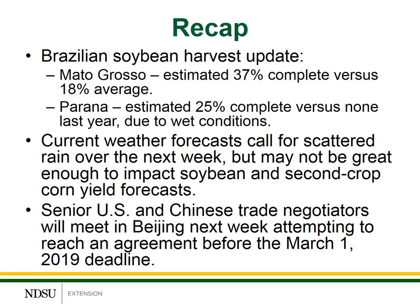To quickly recap: the yield and total production forecasts for Brazilian soybeans have slowly been dropping over the last two months, primarily because of hot, dry weather conditions in the central and southern growing regions. When we look at Argentina, they had a little bit of a slower start in planting progress, but their conditions have been a bit more favorable. The current expectations are for average to slightly above average production, but they're not as far along within the growing season, so there's still time for issues to appear.